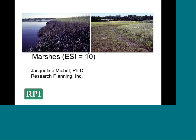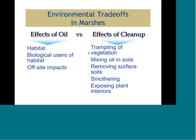Thank you so much for the invitation to present. I've been asked to talk about the impact of oil on marshes. Marshes are the highest-ranked shoreline type in the ESI scale — number 10. When we talk about spills in marshes, it's always about the environmental trade-offs between the effects of the oil and the effects of the cleanup, because the goal of shoreline cleanup is to speed the recovery of the oiled habitat.